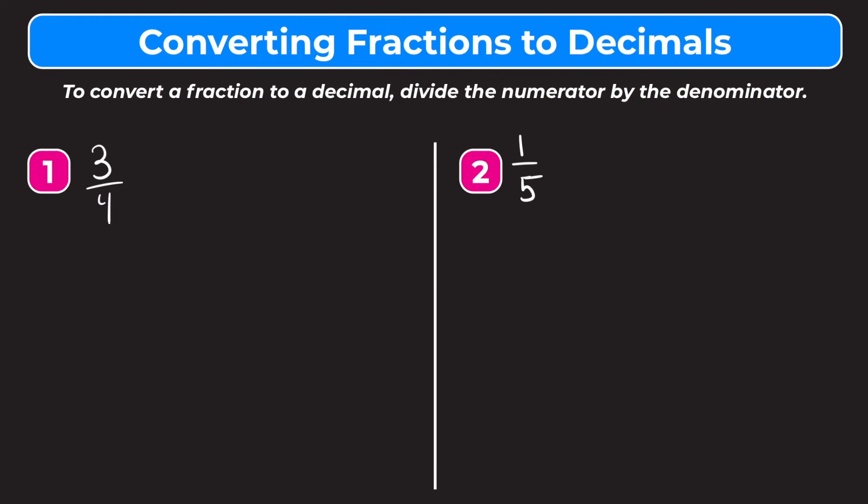In today's video we're going to learn how to convert fractions into decimals. Converting fractions into decimals is pretty simple and there's only one step: divide the numerator by the denominator. You can do this using long division by hand, or if you're allowed to use a calculator you can use that as well and you'll get the same answer. We're going to go through a couple of different examples today.